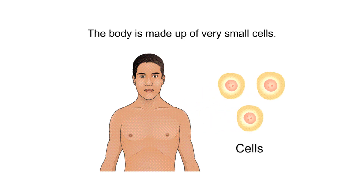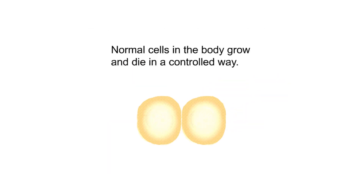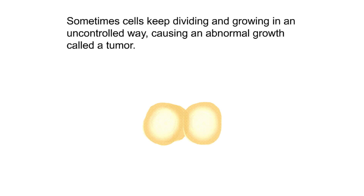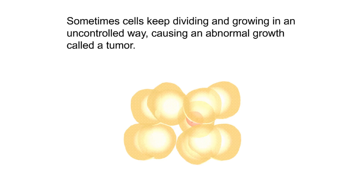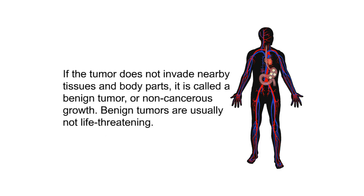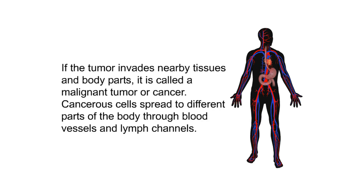The body is made up of very small cells. Normal cells grow and die in a controlled way, but sometimes cells keep dividing and growing in an uncontrolled way, causing an abnormal growth called a tumor. If the tumor does not invade nearby tissues and body parts, it is called a benign or non-cancerous tumor. If it does invade nearby tissues, it is called a malignant tumor or cancer. Cancerous cells spread through blood vessels and lymph channels.